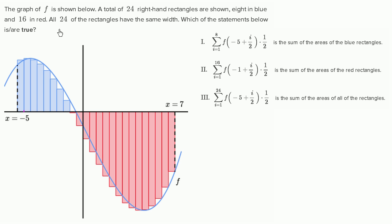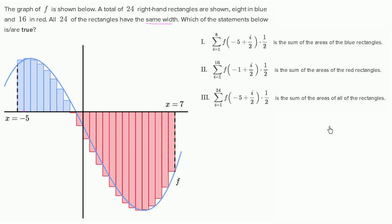Eight in blue, we see that. Sixteen in red, all right. All 24 of the rectangles have the same width. Which of the statements below is or are true? They give us three expressions in sigma notation. This first one is the sum of the areas of the blue rectangles. This is the sum of the areas of the red rectangles. This is the sum of the areas of all the rectangles. I encourage you to pause the video and try to determine on your own which of the statements is or are true.